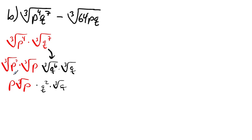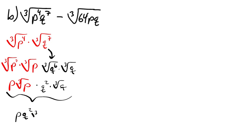Now we have p times the third root of p, and q squared times the third root of q. Since both radical parts have the same index, we can combine the outside terms and the radical terms together. The entire left side simplifies to p q squared times the cube root of pq.